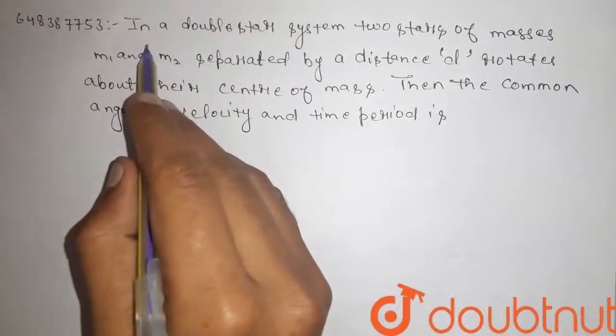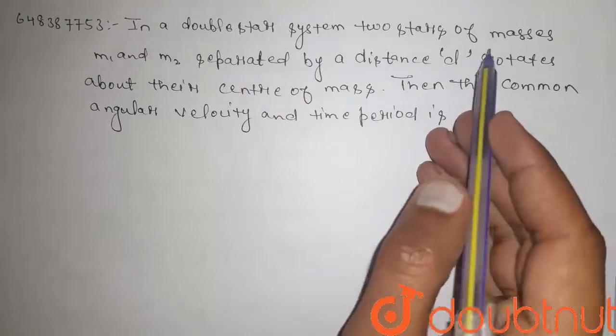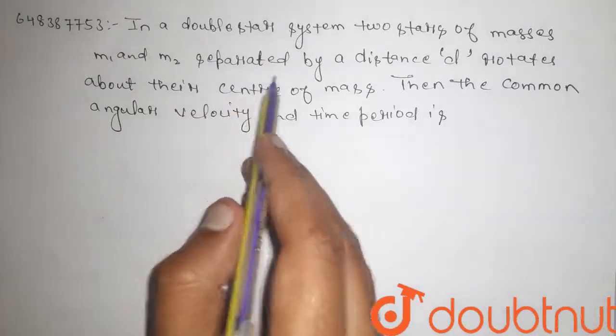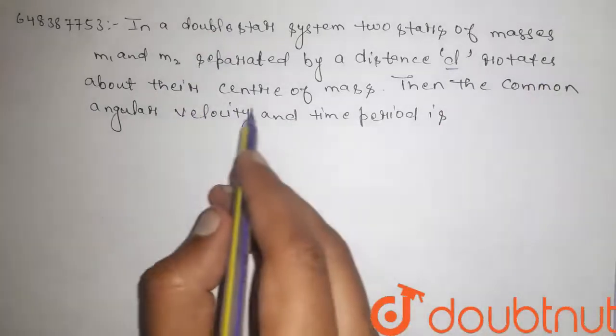Hi guys, here is the question. In a double star system, two stars of masses m1 and m2 separated by a distance d rotates about their center of mass.